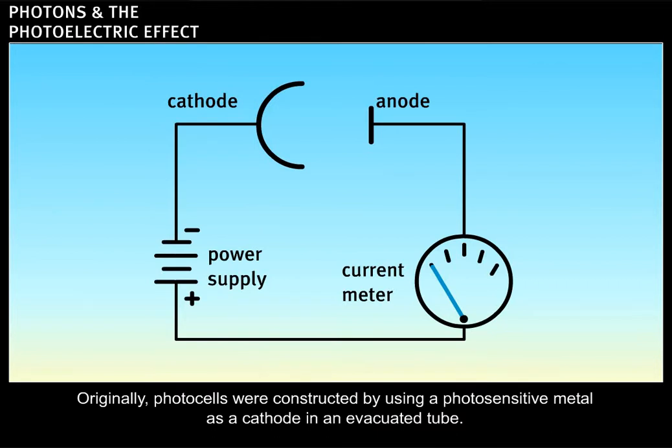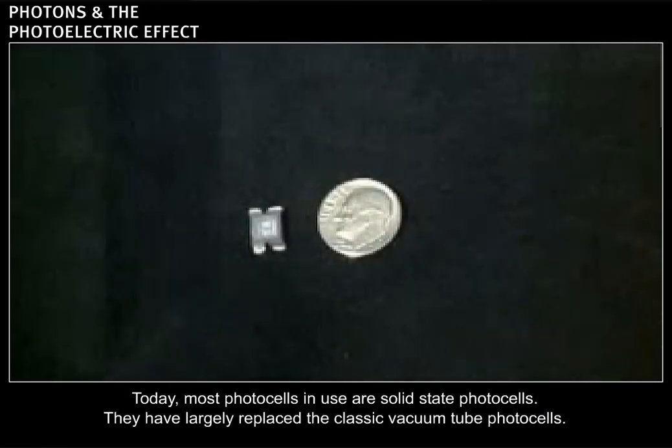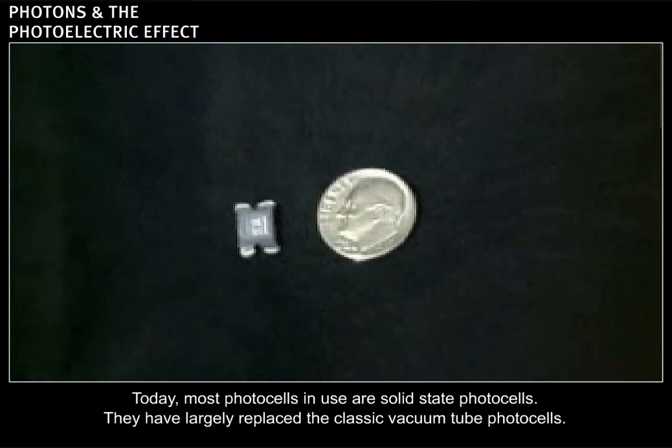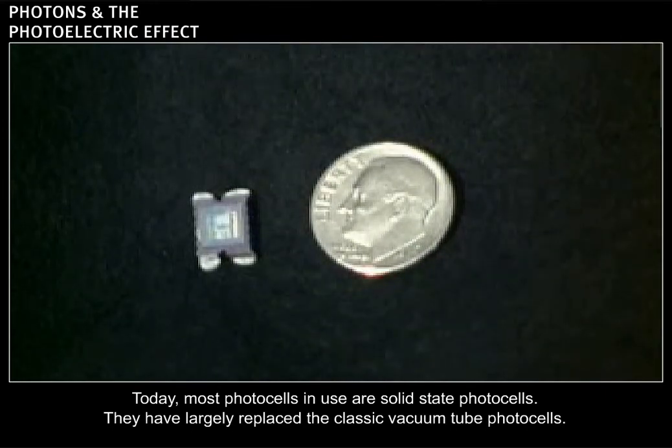Originally, photocells were constructed by using a photosensitive metal as a cathode in an evacuated tube. By applying a voltage to the anode and cathode of the cell, the photoelectrons emitted by the cathode move to the anode and a current flows in the circuit. Today, most photocells in use are solid-state photocells. They have largely replaced the classic vacuum tube photocells.